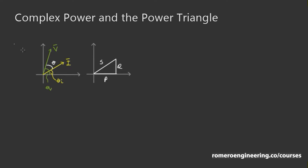If we take a look at this plot here on the left, we have a voltage that has some magnitude and an angle theta_v, and then we have a current that has some magnitude and an angle of theta_i. Then we can define, like we did in the previous lecture, the angle between the voltage and the current as theta. So V has its magnitude at this angle, I has its magnitude at this angle, and theta is the angle between the two.